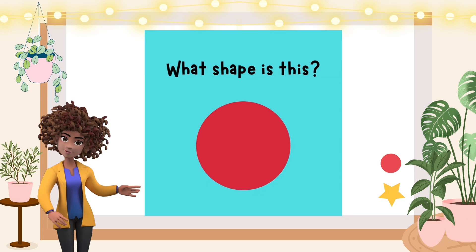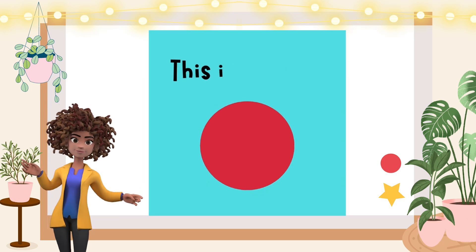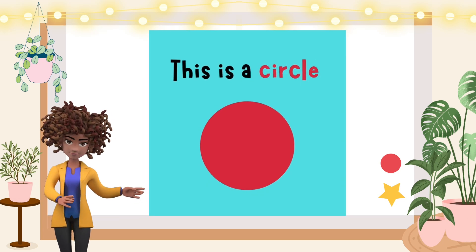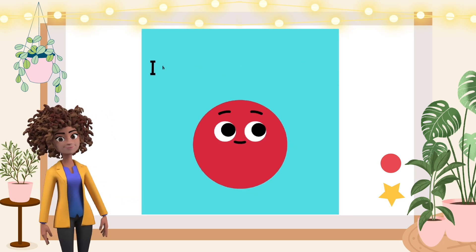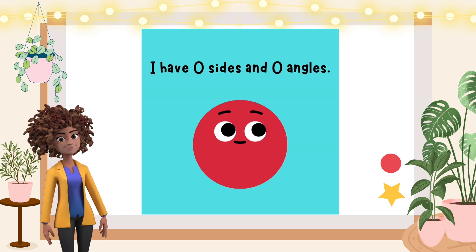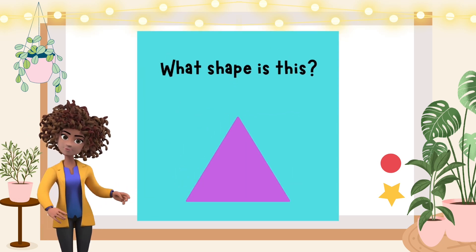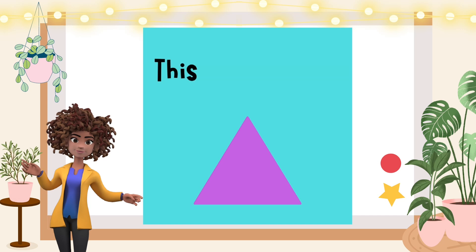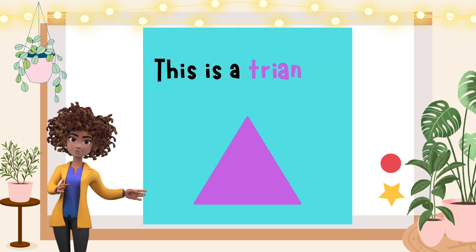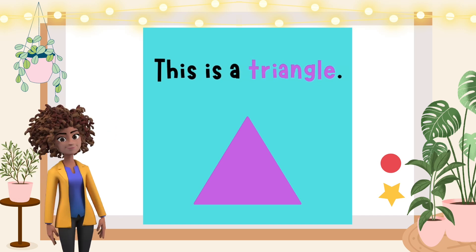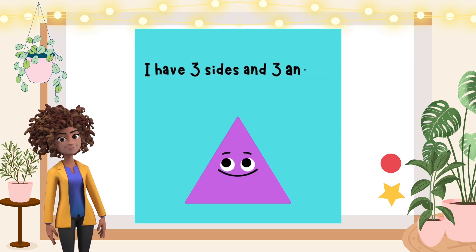Shapes! What shape is this? This is a circle. I have zero sides and zero angles. What shape is this? This is a triangle. I have three sides and three angles.